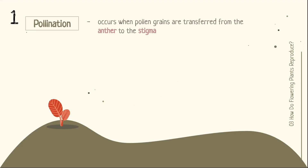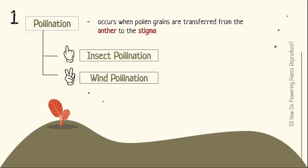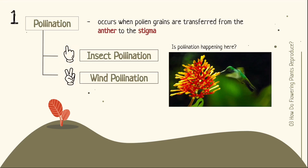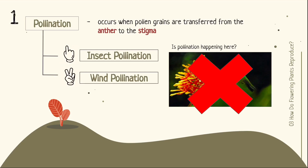The first step of the reproductive cycle is pollination. Pollination occurs when pollen grains are transferred from the anther to the stigma. Plants go through two types of pollination: insect pollination and wind pollination. Note that a bird feeding on nectar from a flower is not pollination — pollination only happens through these two types.